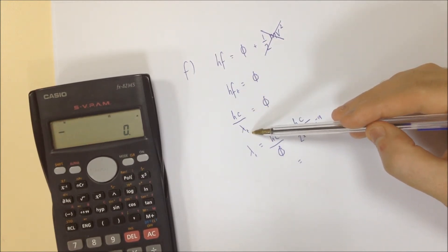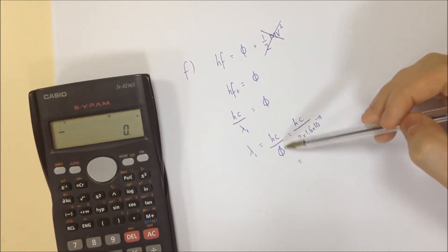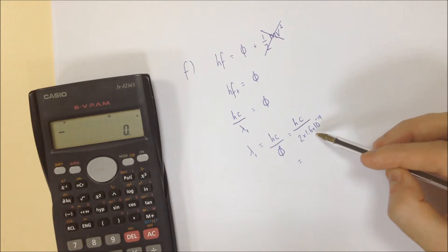convert to wavelength, threshold wavelength, rearrange the equation for HC over phi, and then convert our phi into joules. It's currently two electron volts. We need it in joules.